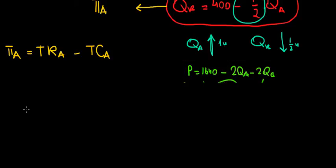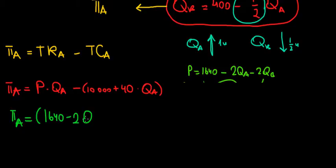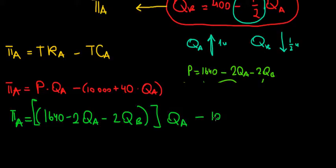The profit of player A is equal to the price times the quantity of player A, minus the cost: 10,000 plus 40 times QA. The price is 1640 minus 2QA minus 2QB. So profit equals (1640 minus 2QA minus 2QB) multiplied by QA, minus 10,000, minus 40QA.